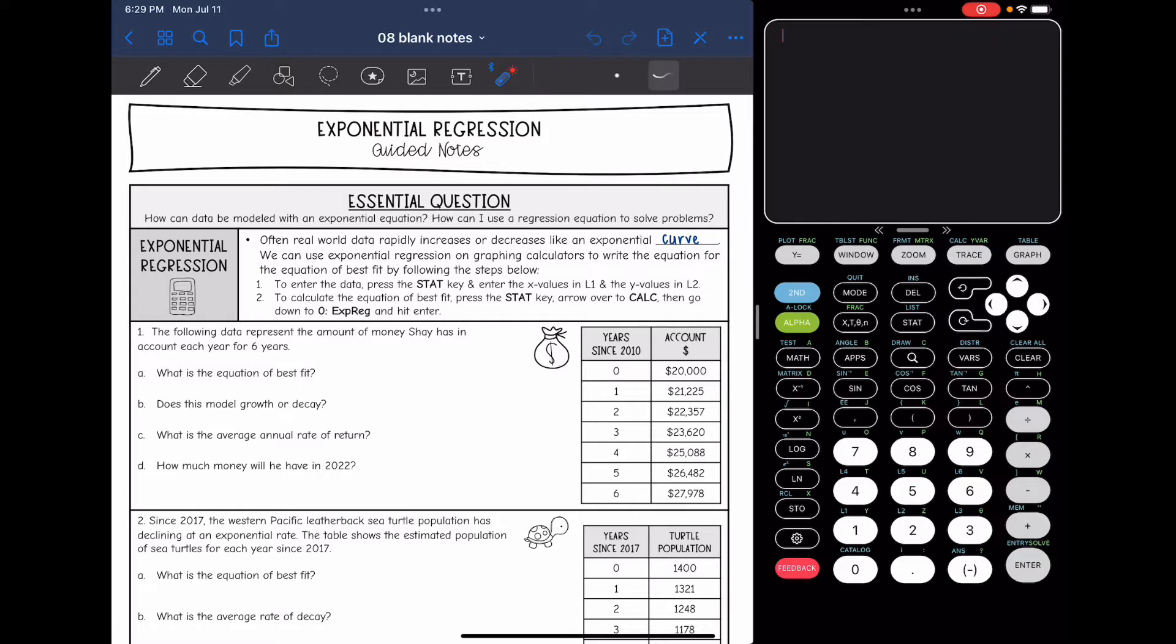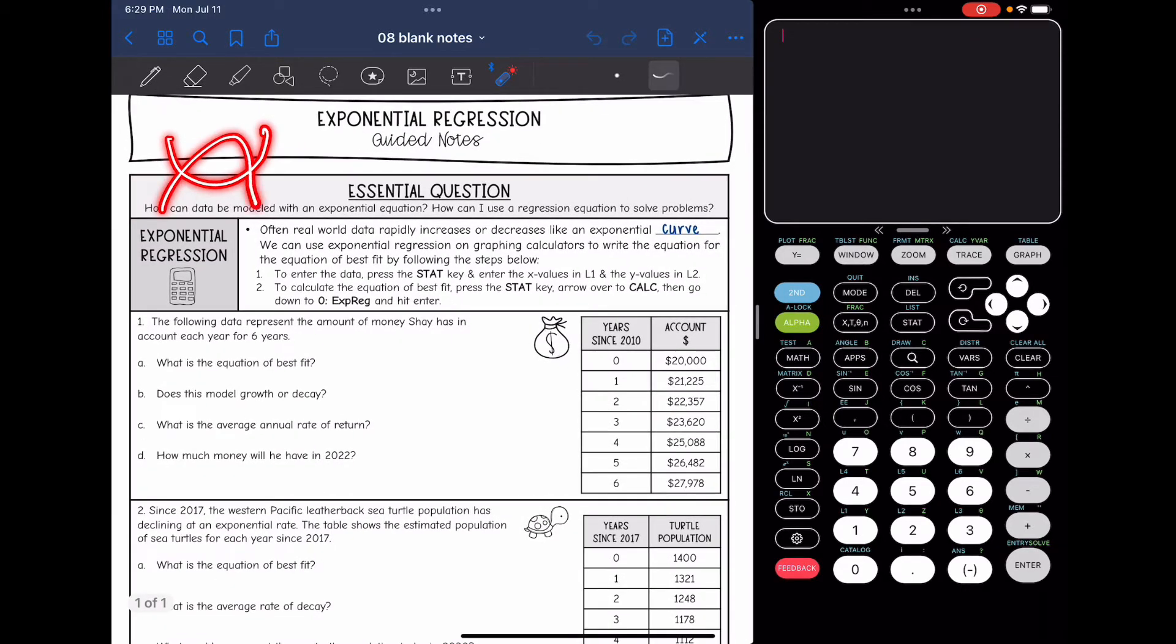So we have done linear regression, which is when our data is generally in the shape of a line. And then we've done quadratic regression, a lot of the times it was actually a flipped parabola when our data was in the shape of a parabola. And then we're going to use exponential regression for data that increases or decreases rapidly.